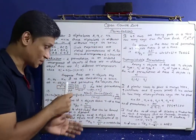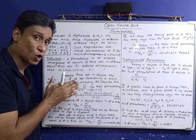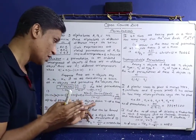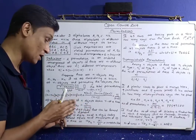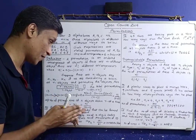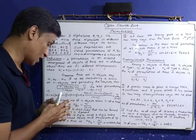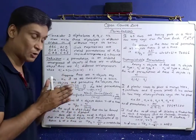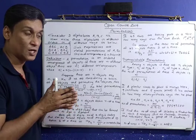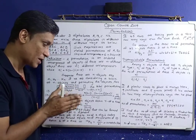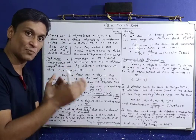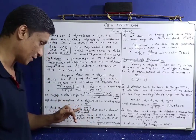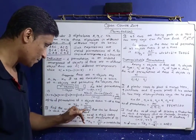Number of permutations of n objects taken r at a time is nPr. nPr equals n factorial divided by n minus r factorial.